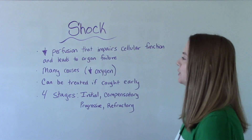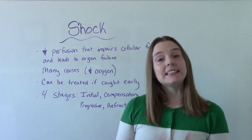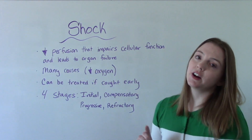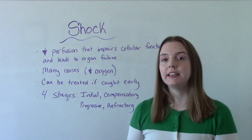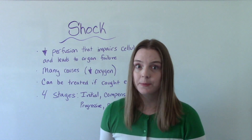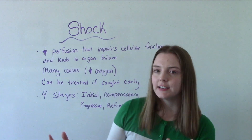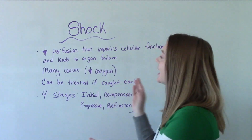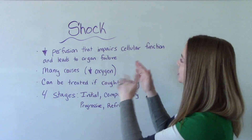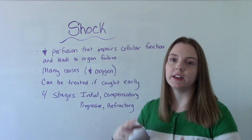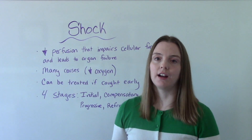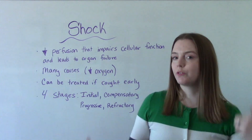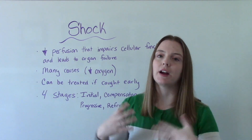What is shock? There is a decrease in tissue perfusion which can impair cellular function, and if we don't do anything about it, it will eventually lead to organ failure and even death. Many types of shock, many causes, which I'll talk about in other videos, but in general the thing they have in common is a lack of oxygen. This lack of oxygen is what's causing the decreased perfusion to the tissues, because the tissues are not getting enough oxygen. If it's caught early on we can treat it, we can reverse it. If it's not done so, then this is life-threatening and the patient could die.